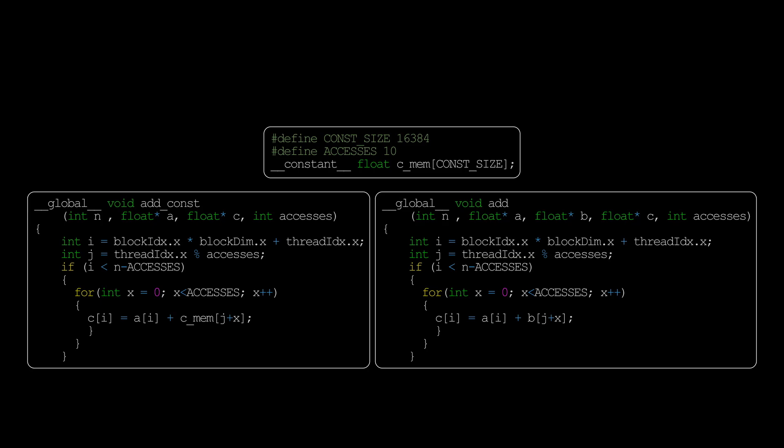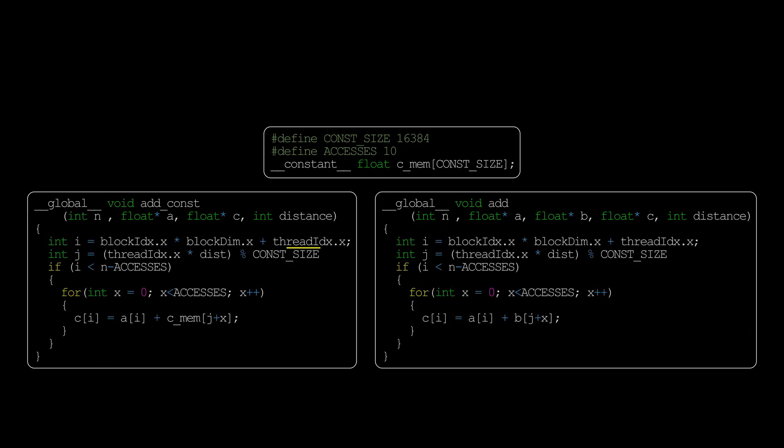Let's run a second benchmark now, but this time, instead of passing the amount of accesses per warp, each thread in a warp will access a different memory region, and we are controlling how far away from each other those accesses are.